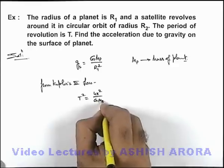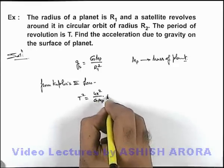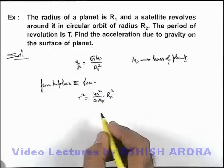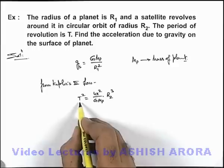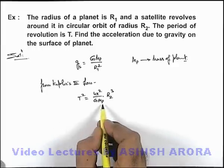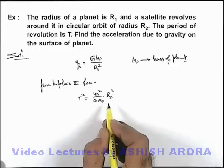Multiplied by R cube. This is the square of time period of revolution of a satellite around the planet. It does not depend on the mass of satellite.